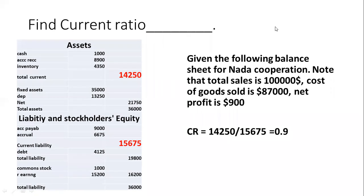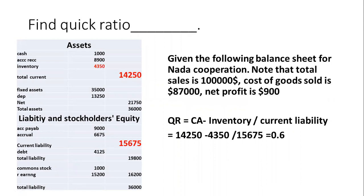The next liquidity ratio is the quick ratio. The quick ratio is current assets minus inventory divided by current liabilities. This subtracts inventory to see the available cash to cover all liabilities. So for $10,250 minus $4,350, we get current assets minus inventory, and comparing to current liabilities, it represents 60% of current liabilities — which is not a safe situation.